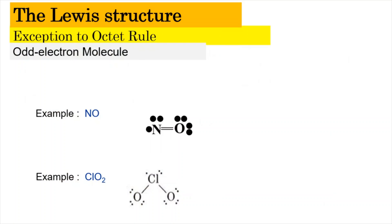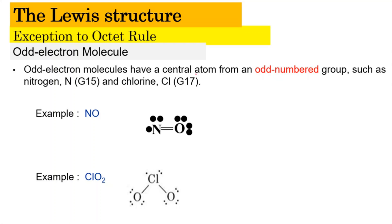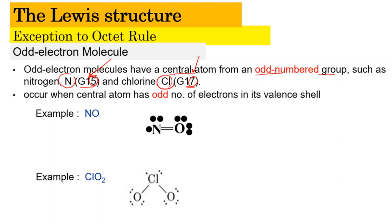Now we're going to look into the odd electron molecule. The odd electron molecule occurs when the central atom comes from an odd-numbered group — for example, nitrogen in group 15 and chlorine in group 17. These are odd-numbered groups: 15 and 17. The central atom, such as nitrogen, has an odd number of electrons in its valence shell. The total number of electrons surrounding the nitrogen will be 1, 2, 3, 4, 5, 6, 7 — because each bond represents 2 electrons.